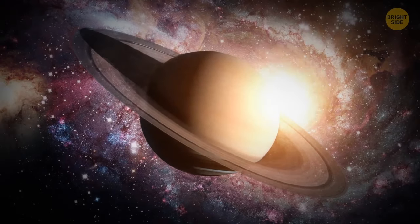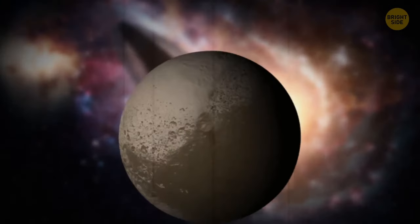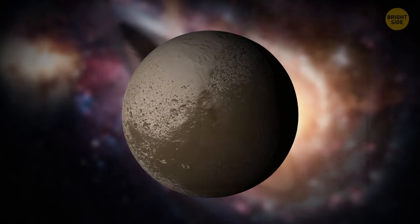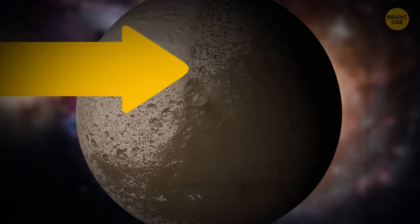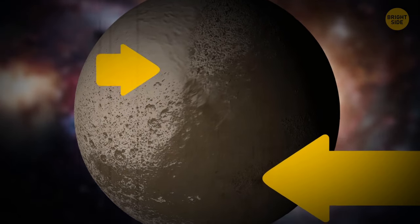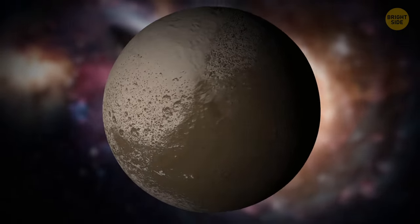Another one of Saturn's moons, Iapetus, has a unique two-tone coloring. The difference between the satellite's two hemispheres is impressive. One of them is light and the other is eerily dark. Scientists haven't figured out this mystery yet.